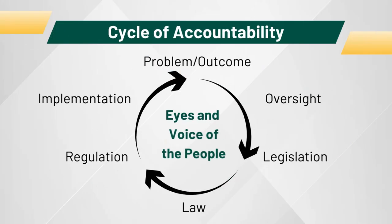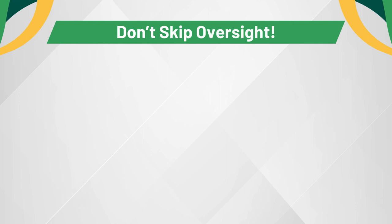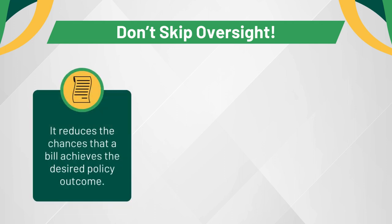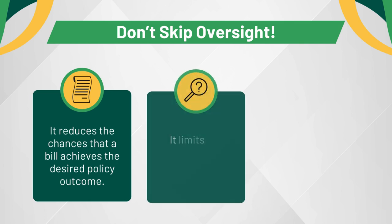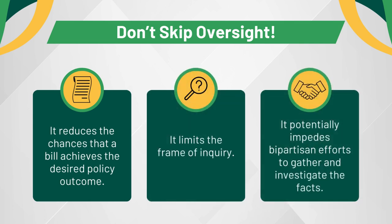Too often across this country, there is a rush to introduce a bill. A problem arises and the bill comes before the oversight. I understand the need to show to the public that the legislature is taking action, and introducing the bill is an easy step. Yet, pursuing legislation before performing oversight can be precarious, and the legislature can show action by conducting oversight. Skipping oversight reduces the chances that a bill achieves the desired policy outcome, it limits the frame of inquiry, and potentially impedes bipartisan efforts to gather and investigate the facts. Inclusion of oversight into the cycle of accountability results in better bills, better outcomes, and better governance.